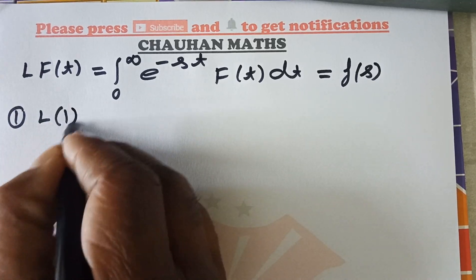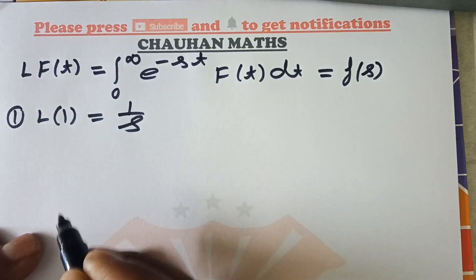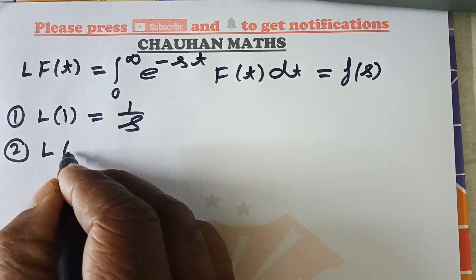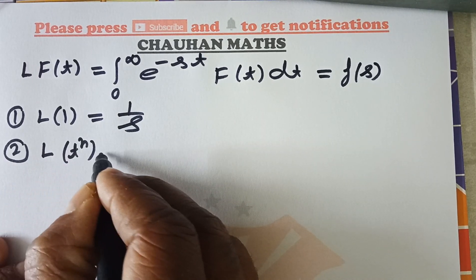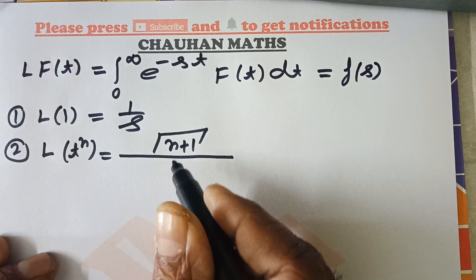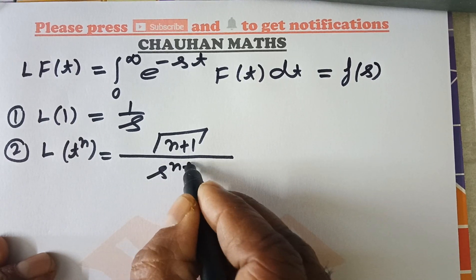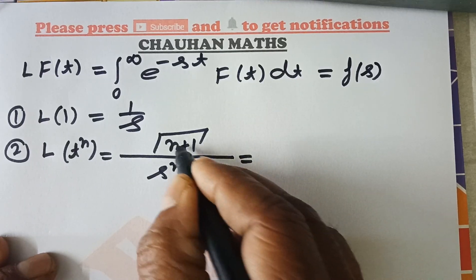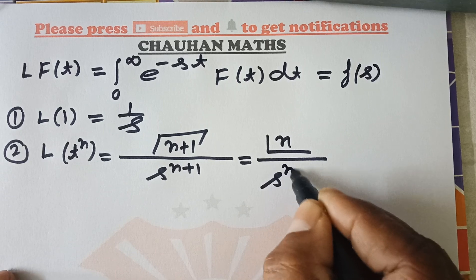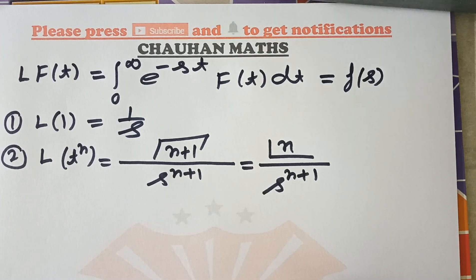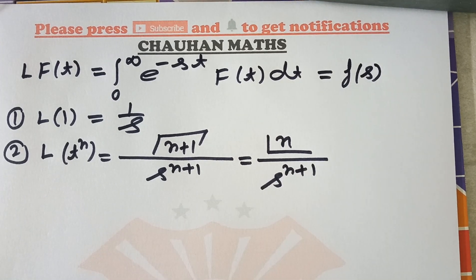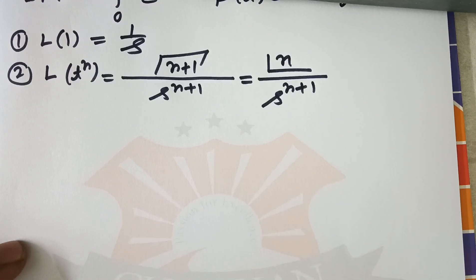اس کا فرسٹ فارملہ: L{1} = 1/s. سیکنڈ نمبر کا فارملہ: L{t^n} = gamma(n+1) / s^(n+1). یہ جو gamma(n+1) ہے، یہ factorial n کے equal ہوتا ہے اگر n whole number ہے، لیکن n fraction ہے تو اس کی value کچھ اور طرح ملتی ہے۔